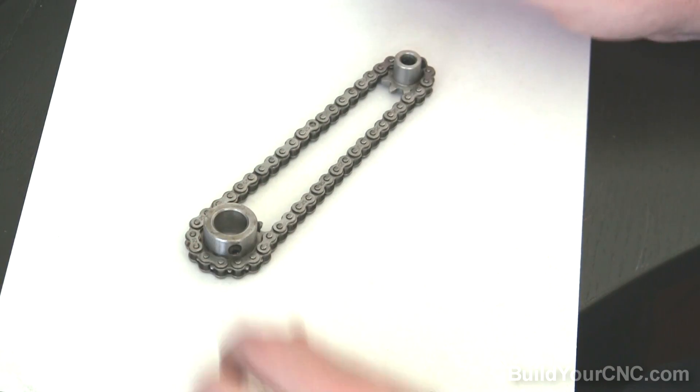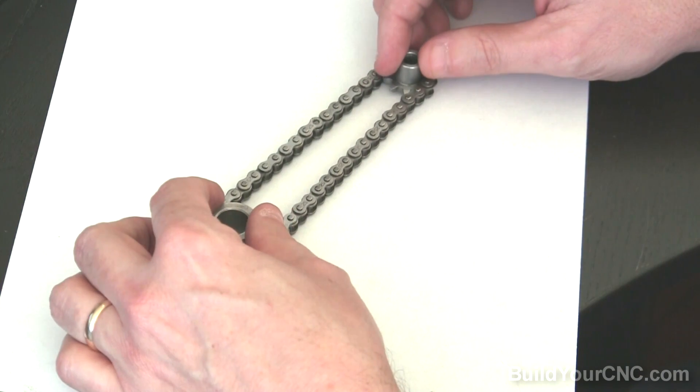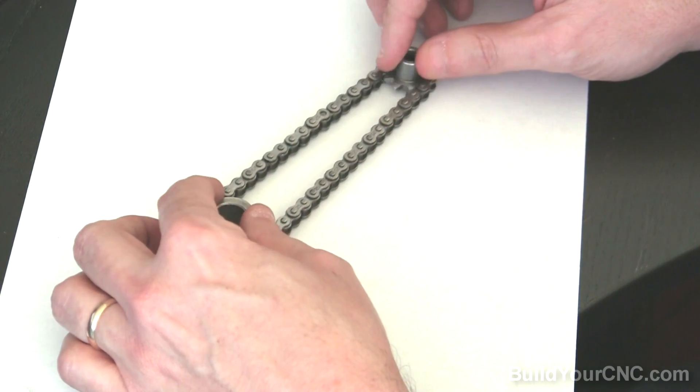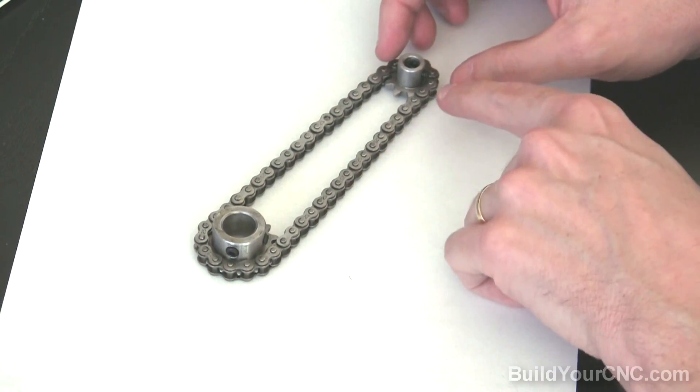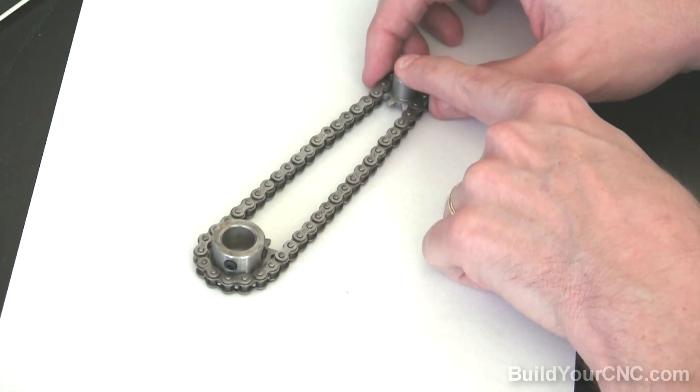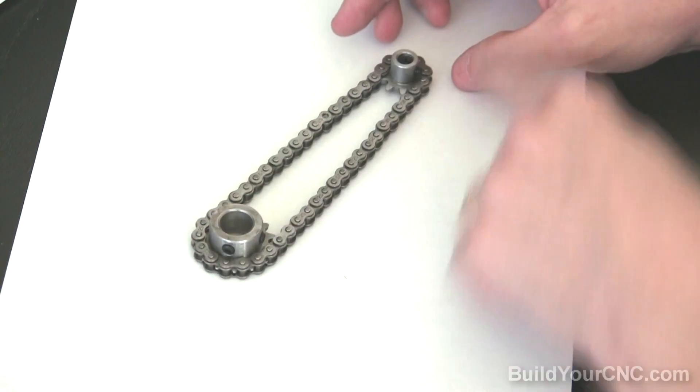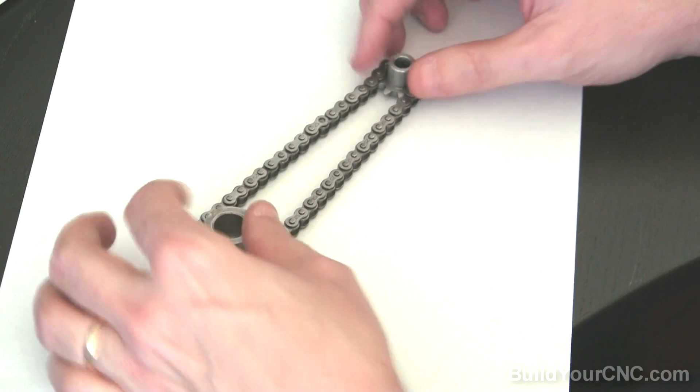A good example would be in, let's say, a lathe or an indexing fourth axis for a CNC machine where the motor is turning at a specified distance and you want to increase the resolution. You'd do that by putting a small drive sprocket in a configuration like this onto a larger drive sprocket.